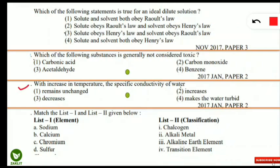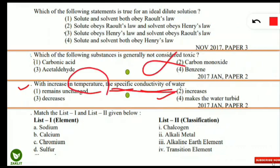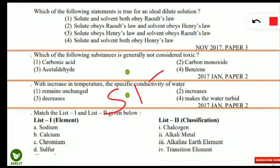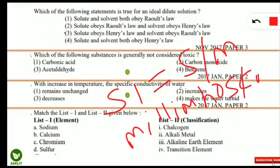With increase in temperature, the specific conductivity of water shows what kind of change? The correct answer is it increases — temperature is directly proportional to the specific conductivity of water. The SI unit of conductivity is Siemens per meter (S/m), and in US units the standard is millimhos per centimeter (mmhos/cm).